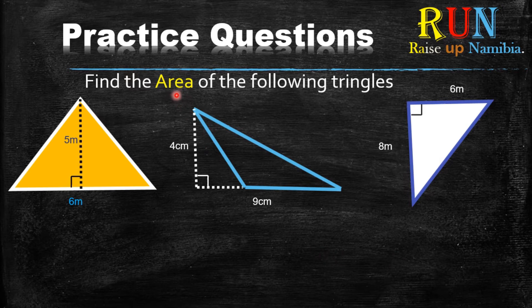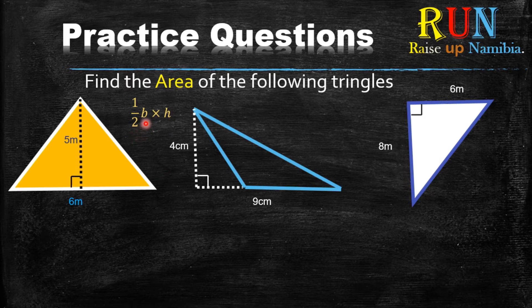Now when it comes to the area of a triangle, there is actually a certain formula that we use. Now this formula is half breadth times height or base times height. So it's half base times height. Now when you use this formula, it makes it easier to get the area of a triangle.